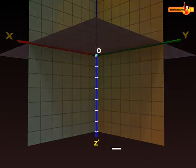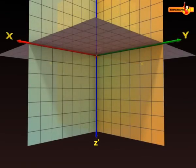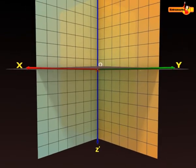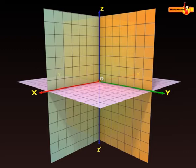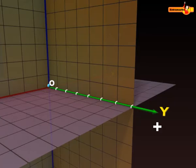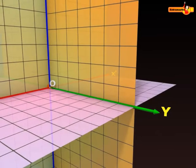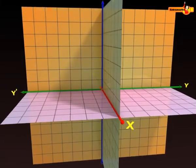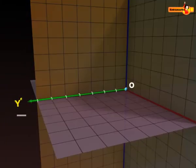Similarly, to the right of the XZ plane along the direction of OY is taken as positive, and to the left of the XZ plane along the direction of OY' is taken as negative.